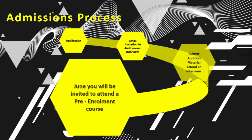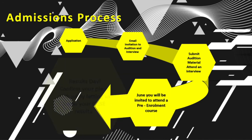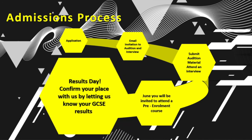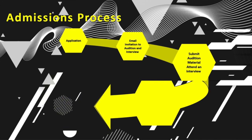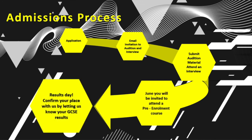Following your offer, in June you will be invited to attend a pre-enrolment event at college, either in person or online, giving you a flavour of what the course will be like. You will be able to meet your tutors and fellow students and ask any questions you may have. The final stage of your application happens once you have received your GCSE results — you will need to contact the college to confirm your results and formally accept your place on the course starting in September.